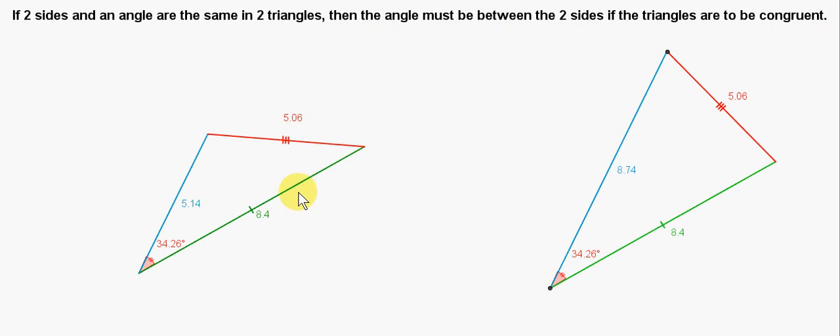So we see two sides that are the same in these two triangles. However, the angle that is the same is not between these two sides. It's down here. Clearly, this angle and this angle are different.